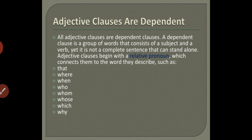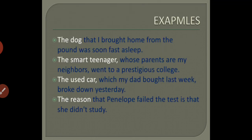For example: 'The dog that I brought home from the pound was soon fast asleep.' The phrase 'that I brought home from the pound' has a relative pronoun 'that,' so it does not stand alone because it is not giving complete meaning. It is an adjective clause because it is describing the phrase 'the dog.'